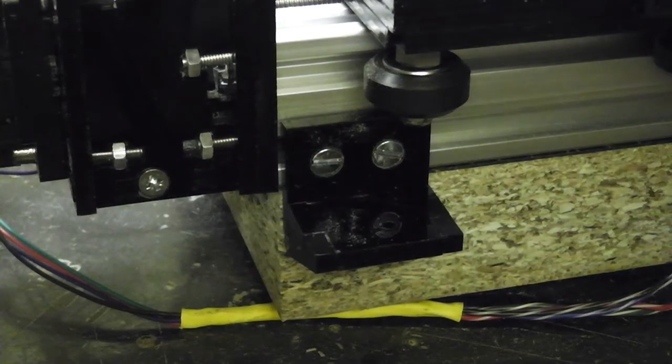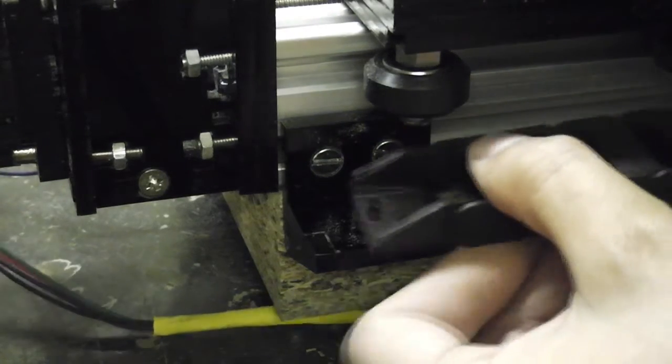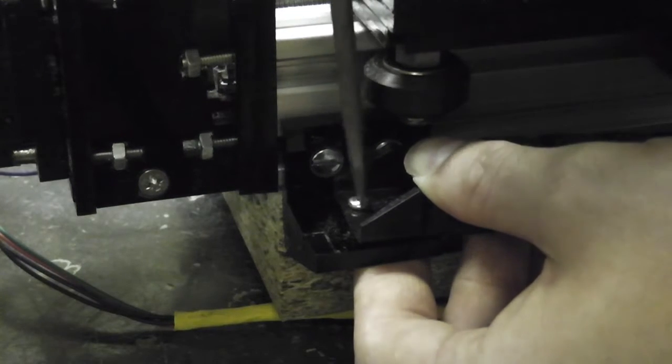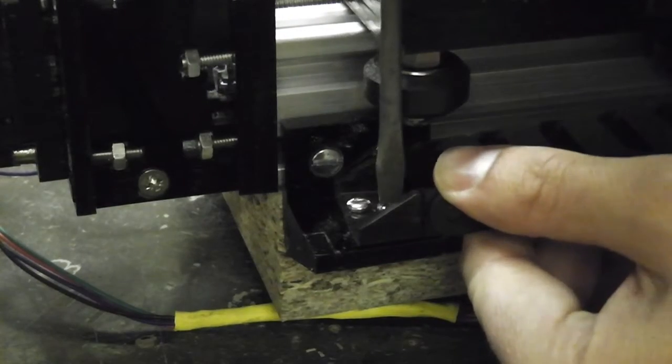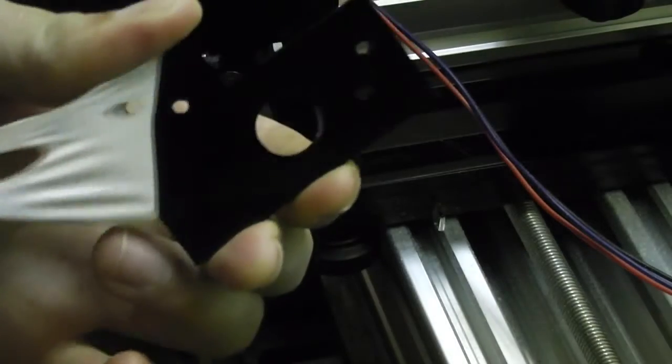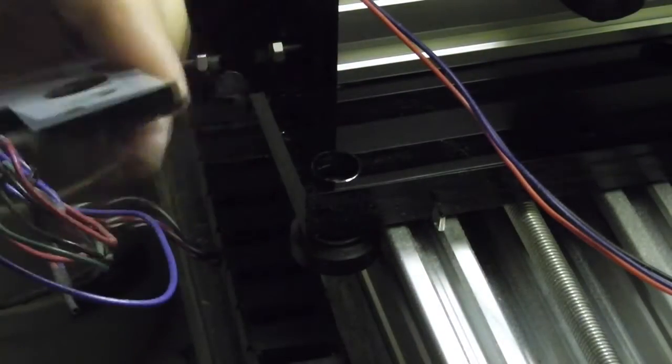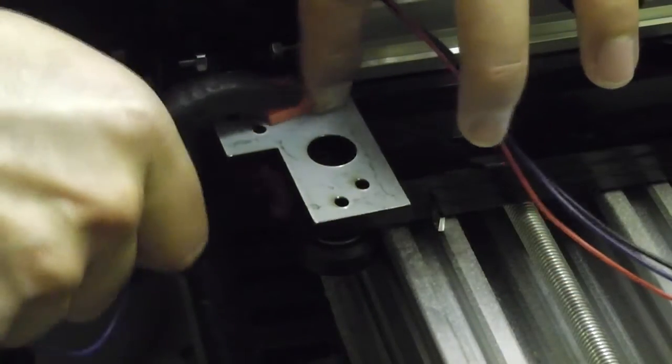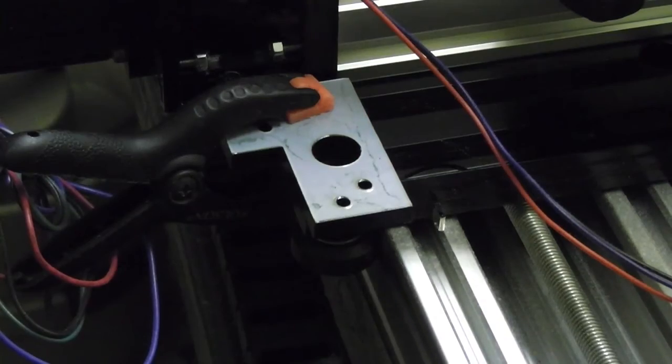I'm going to bolt one end of the Y axis cable chain to that bracket. And that end of the cable chain is where all the wires will enter the machine. This bracket will hold the other end of the Y axis cable chain and the start of the X axis chain. It's going to be glued to the back of the right-hand Y carriage.